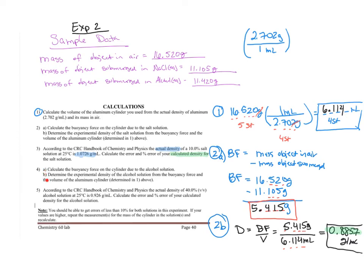Questions 4a and b are very similar to 2a and b, but you're going to be calculating the buoyancy force by taking the mass in air minus the mass submerged, and then your density the same way, buoyancy force over volume for 4b. Question 5 is just like 3, except you're given a new actual density because we're looking at the alcohol solution, 0.926.